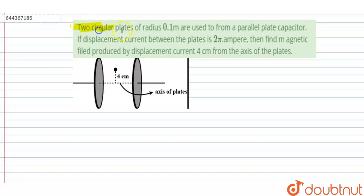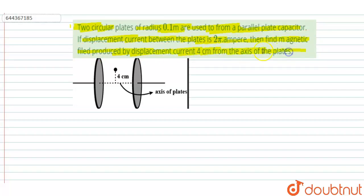In this question, two circular plates of radius 0.1 meter are used to form a parallel plate capacitor. If the displacement current between the plates is 2π ampere, then find the magnetic field produced by the displacement current at 4 centimeters from the axis of the plate.